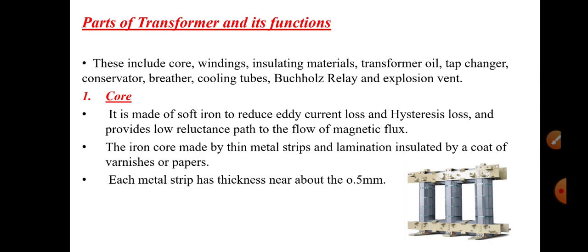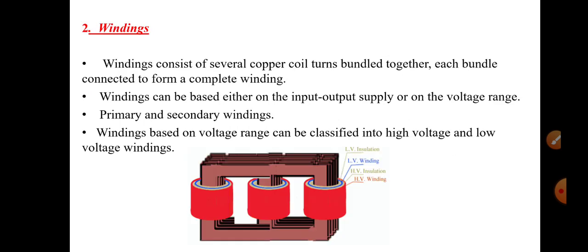The first part is the core. The main function of the core is to support the winding. It is made up of soft iron or silicon steel. This material is used to reduce eddy current loss and hysteresis loss. The core is made of different thin metallic strips which are laminated together, and this lamination is insulated by a coat of varnish or paper. The thickness of each metal strip is very small, in the range of 0.5 mm.